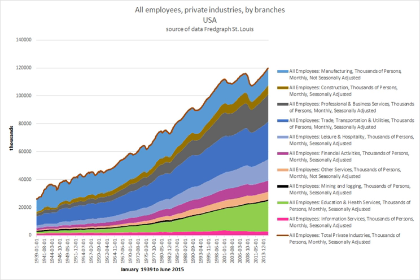High-risk industries for young workers include agriculture, restaurants, waste management, and mining. In the United States, those under the age of 18 are restricted from certain jobs that are deemed dangerous under the Fair Labor Standards Act. Youth employment programs are most effective when they include both theoretical classroom training and hands-on training with work placements. Youth unemployment rates tend to be higher than the adult rates in every country in the world.